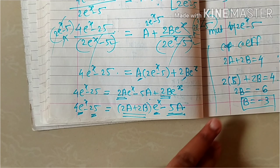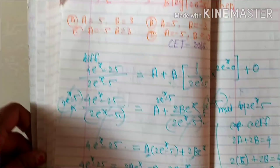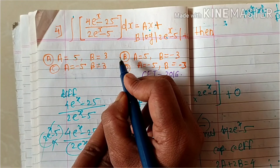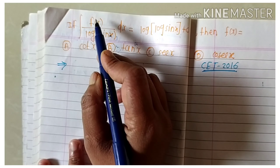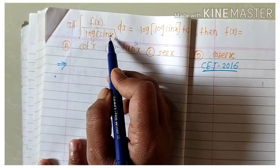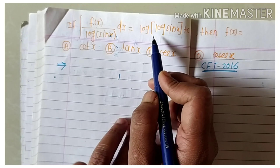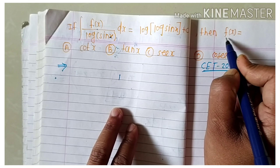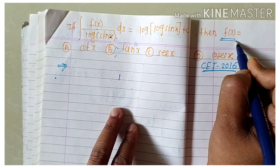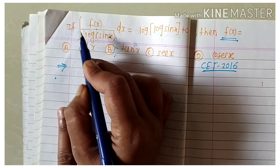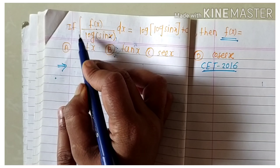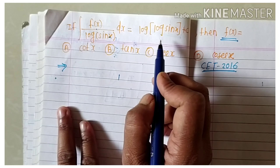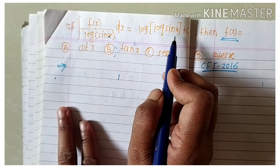So we get the value of a as 5 and b as minus 3. Now the second problem: the integration of f(x) times log(sin x) dx equals log(log(sin x)) plus some constant, and it is required to find f(x).